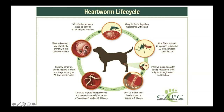Looking at the heartworm life cycle: the mosquito feeds, ingesting microfilaria from an infected host. The microfilaria matures in the mosquito to infective L3 larvae two weeks post-infection. The infective larvae are deposited during subsequent bites and migrate through the wound into the host. Most L3 larvae mature to L4 in subcutaneous tissues in one to three days. The L4 larvae migrate through tissues to sexually immature adults in 50 to 70 days, then migrate to the heart and lungs as early as 70 days post-infection, developing to sexual maturity primarily in the pulmonary artery. Microfilaria appear in the blood as early as six months after infection.